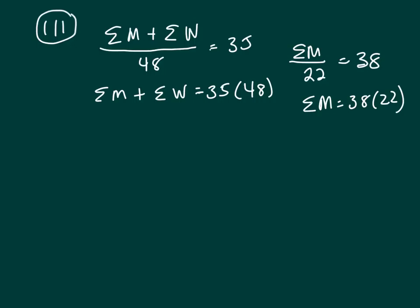So sum of men, I'm going to substitute that in here. I've got 38 times 22 plus sum of the women is 35 times 48.